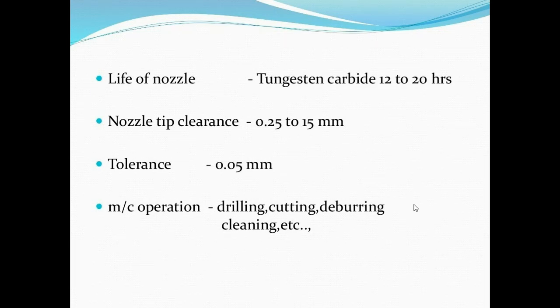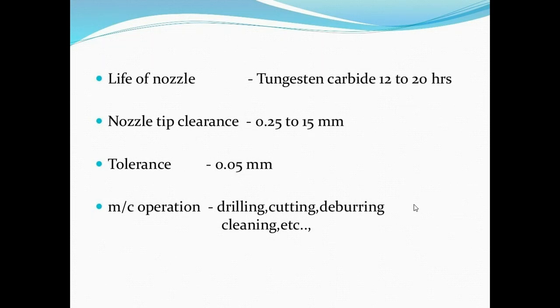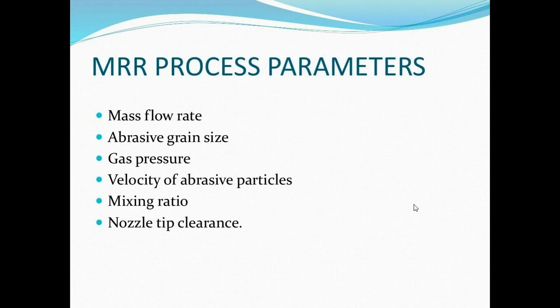The process parameters in abrasive jet machining are: mass flow rate, abrasive grain size, gas pressure, velocity of abrasive particles, mixing ratio, and nozzle tip clearance. The mixing ratio is defined as the mass flow rate of abrasive divided by the mass flow rate of gas. Other parameters include pressure and stand-off distance.